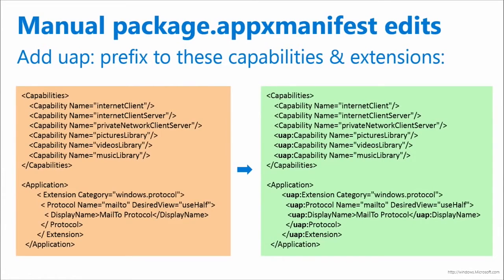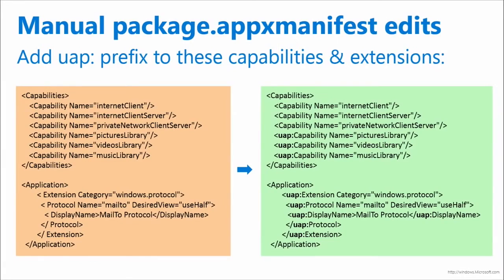You might also need to change some of the capabilities in the package.appx manifest. A lot of the changes were routine and repetitive, so we've done those. But some of these capabilities — for example, APIs to access the pictures library, videos library — these named areas now need to be prefixed with 'UAP:' because that's where the APIs sit. Likewise, if you are supporting a protocol extension or a file extension, you need to go in and edit those.